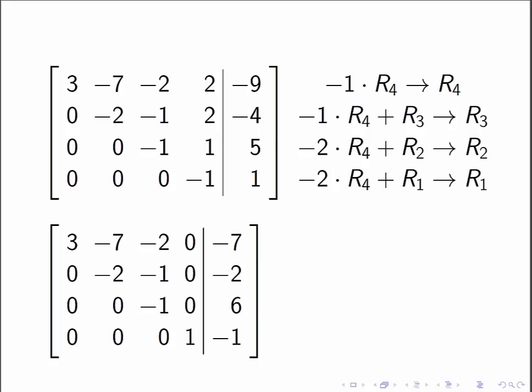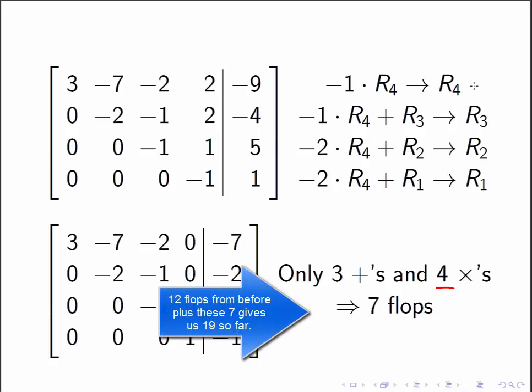So if I do all four of those row operations, then I have got this. Again, first three columns didn't change. Last column did change, and I have done a grand total of three additions and four multiplications. That extra multiplication was from this very first row operation. So I have done seven floating point operations.